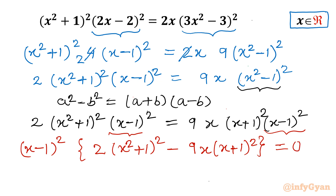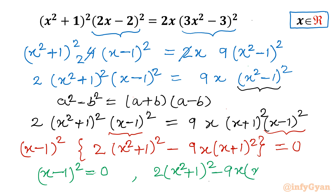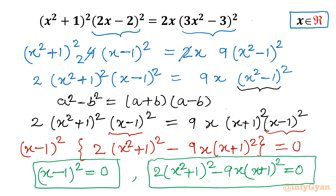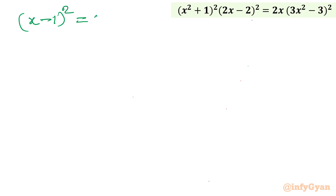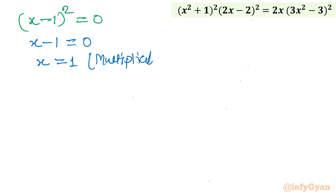Since f · g = 0, either f = 0 or g = 0. From the first factor: (x - 1)² = 0, so x - 1 = 0, giving x = 1 with multiplicity 2. One solution is confirmed with multiplicity 2.